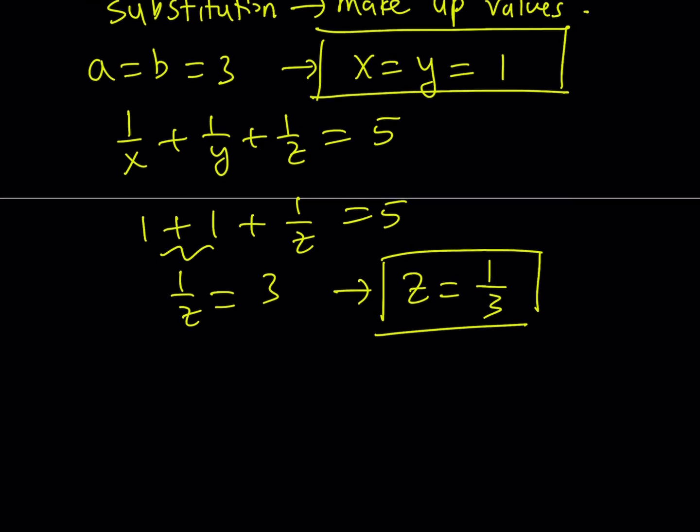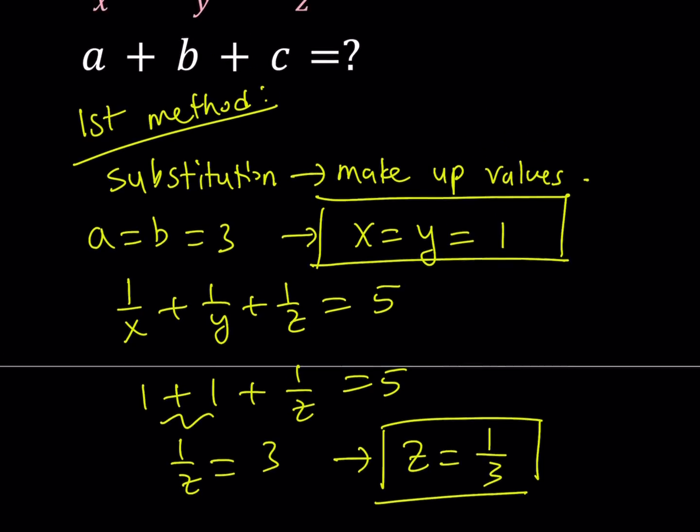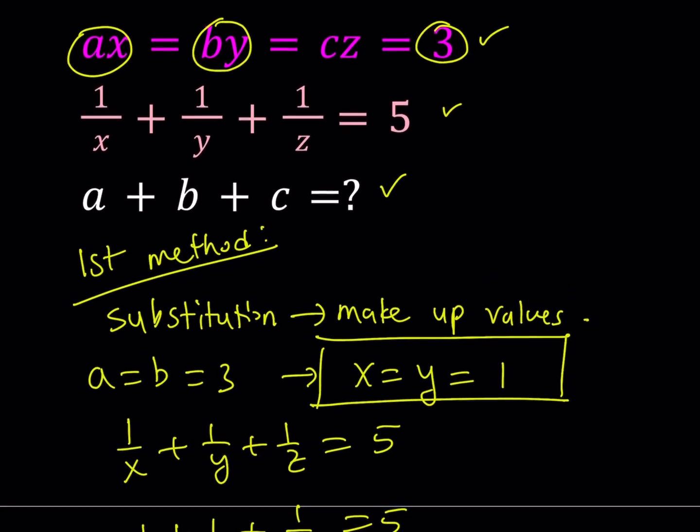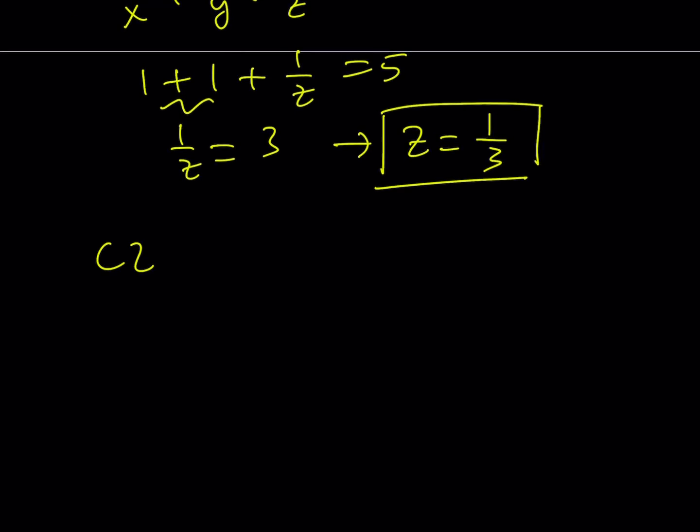Okay, great. So, now I got the values of X, Y, and Z. But the question is finding A plus B plus C. But I already have A and B. So, all I have left is finding C. But I do know that CZ is equal to three. And if Z is equal to one-third, C times one-third is equal to three. This implies that C equals nine.